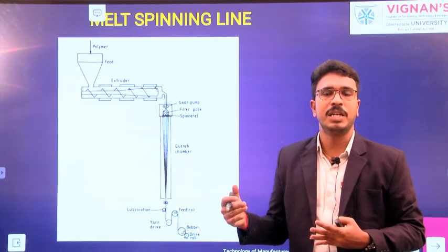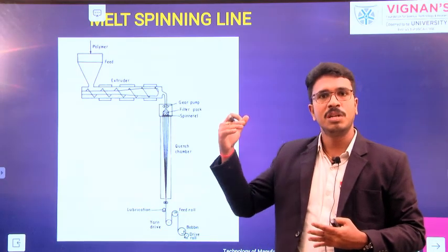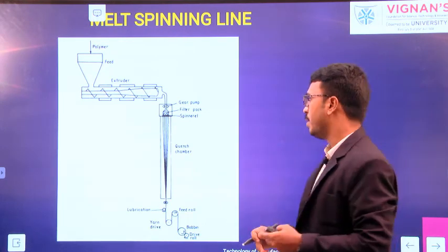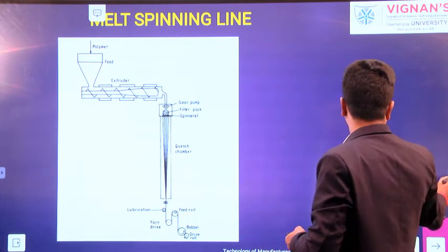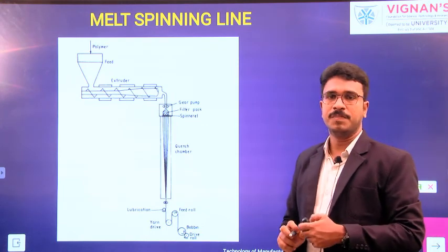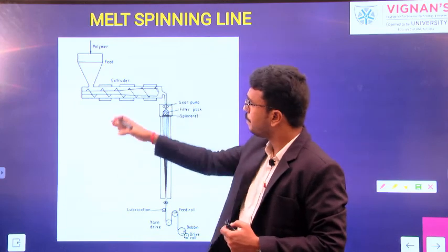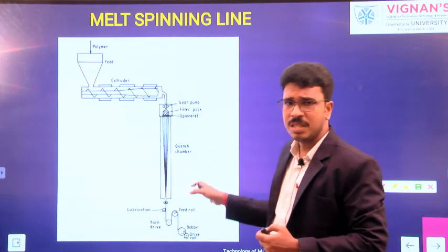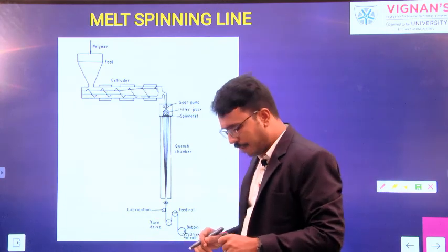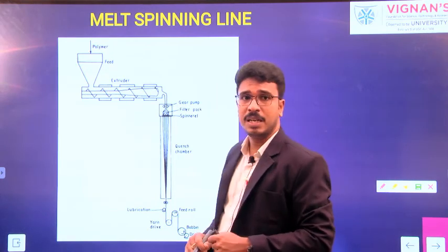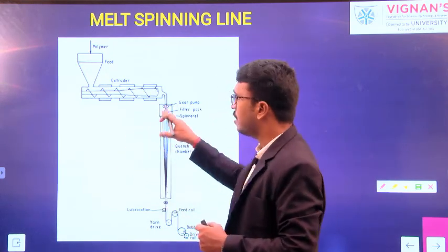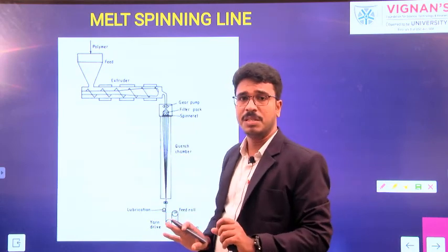The polymer — specifically the molten polymer — has to pass through different elements. So finally we are producing the continuous filaments. This is the line diagram of the melt spinning line. If you carefully observe this melt spinning line, first I will try to figure out what are the different elements.